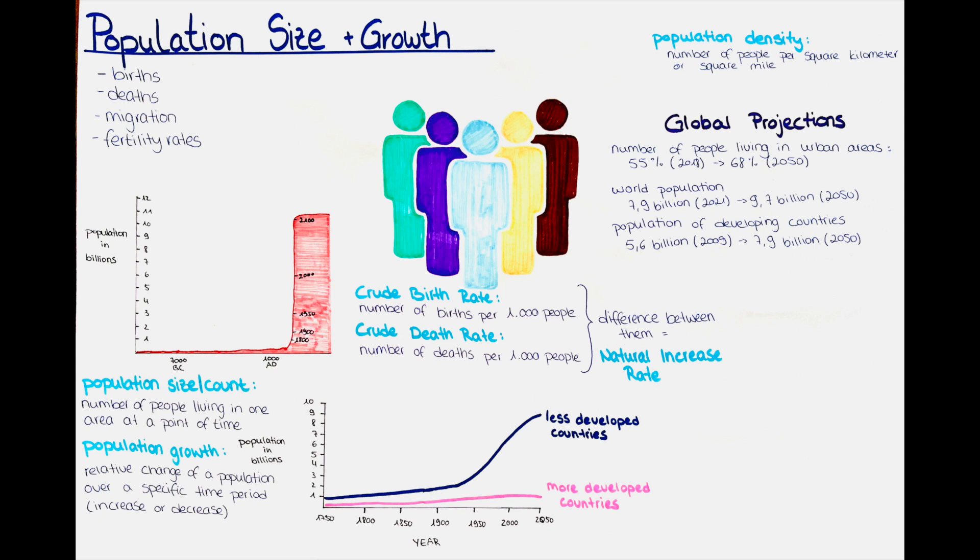What is the effect of migration on public health? Migration can have both positive and negative effects on public health, and its impact can vary depending on several factors such as the characteristics of the migrating population, the conditions in the host and home countries, and the availability and accessibility of healthcare services. There are different ways in which migration can affect public health.